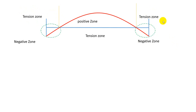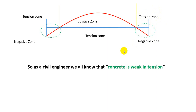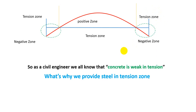As a civil engineer, you all know that concrete is weak in tension. That's why we provide steel in the tension zone. Steel is always provided in the tension zone. So from here we can clearly understand that this is the tension zone at the bottom, and from that point to that point and also that point to that point, we have to provide steel in the top portion.